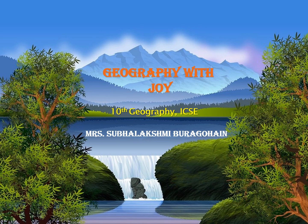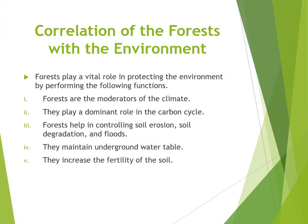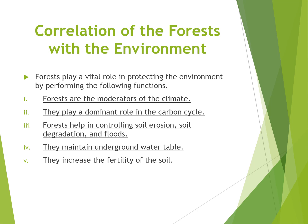Without much delay, let's start the class. Correlation of the forest with the environment: forests have an intricate interrelationship with the environment. Forests play a vital role in protecting the environment. They are moderators of climate, playing an effective role in controlling humidity, temperature, and precipitation. They play a dominant role in the carbon cycle, absorbing atmospheric carbon dioxide and helping maintain the purity of air and controlling atmospheric pollution.